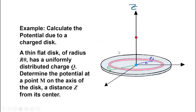In this example, we are going to calculate the electric potential due to a charged disk. This blue disk is thin and flat, has a radius of R0, and has a surface charge density sigma and total charge plus Q. So this disk has uniform charge density. We want to find the electric potential at a point on the z-axis that passes through the center of this disk — I call it M.